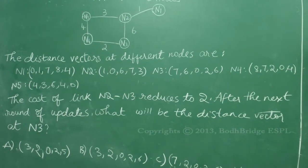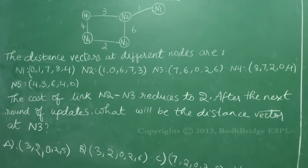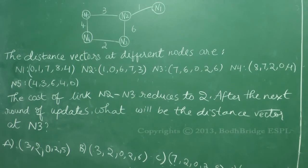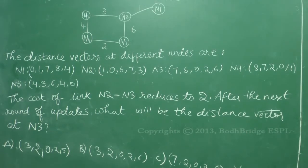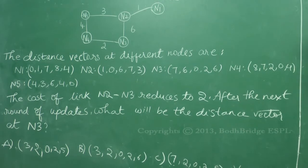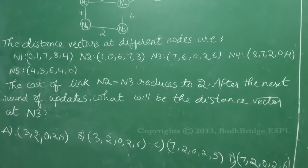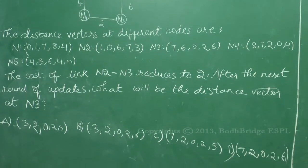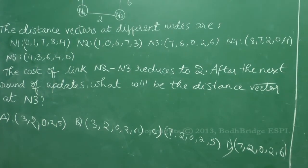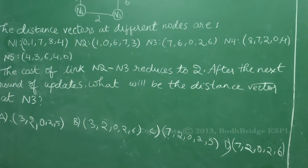The question is: the cost of the link between N2 and N3 reduces to 2 from 6. After the next round of updates, what will be the distance vector at N3? Option A: 3, 2, 0, 2, 5. Option B: 3, 2, 0, 2, 6. Option C: 7, 2, 0, 2, 5. Option D: 7, 2, 0, 2, 6.